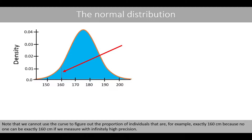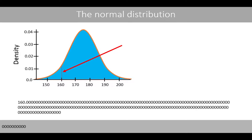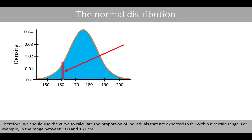Note that we cannot use the curve to determine the proportion of individuals that are exactly 160 centimeters, because no one can be exactly 160 centimeters if we measure with infinitely high precision. The probability of finding a person who is exactly 160 centimeters tall is approximately 0. Therefore, we should use the curve to calculate the proportion of individuals expected to fall within a certain range, for example between 160 and 161 centimeters.